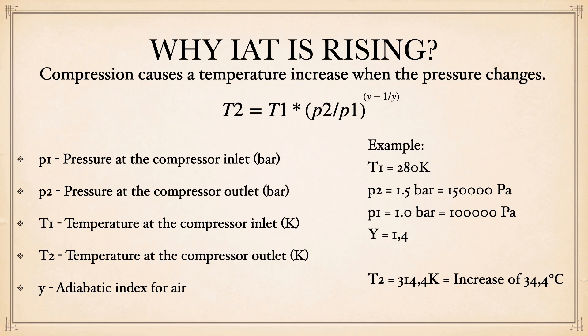With the Poisson equation, we consider the inlet pressure, outlet pressure, inlet temperature, outlet temperature, and the adiabatic index for air. On the right side of the screen you can see the example: inlet temperature is 280 Kelvin, outlet pressure is 1.5 bar, inlet pressure is 1.0 bar — a difference of 0.5 bar — and the adiabatic index is 1.4. Calculating this, the temperature increases by 34.4°C, which is a significant rise just from compressing air by 0.5 bar.